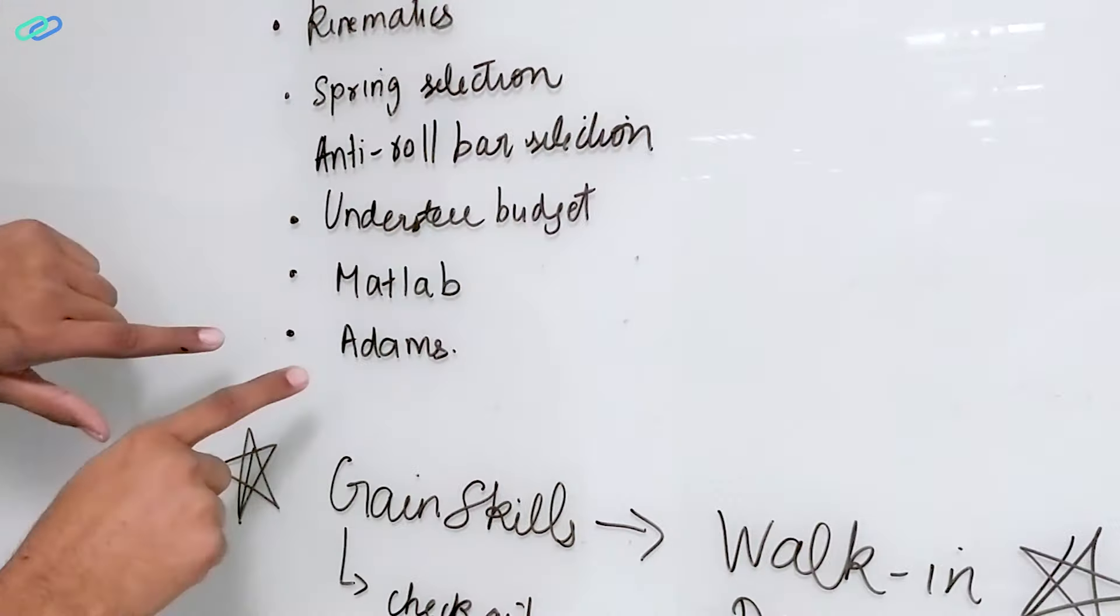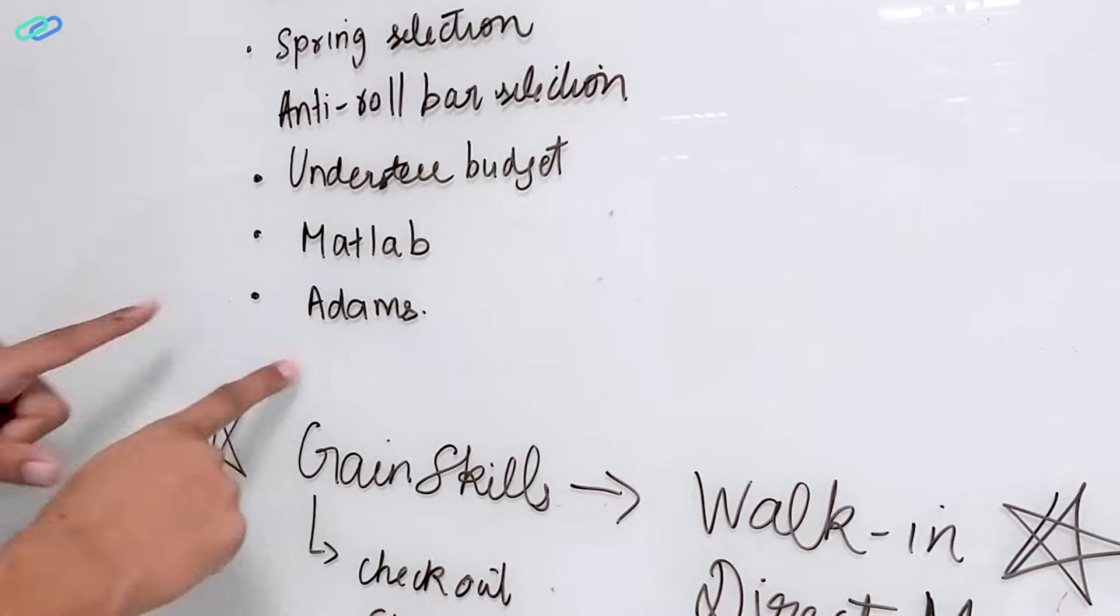You can also explore ADAMS. ADAMS is a multi-body dynamics simulation tool. What does that mean? Your suspension is a mechanism, and you're looking at the dynamics of it - the effect of forces as a function of time.